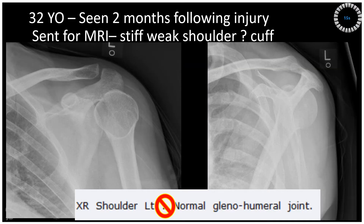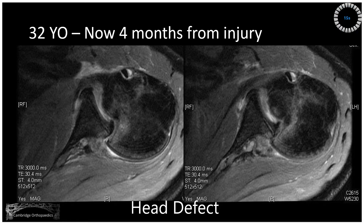This is a 32-year-old who presents two months following their injury. They present with stiffness and weakness in the shoulder and are sent for an MRI. These were the initial radiographs. Now four months from injury, the patient returns with the MRI showing this abnormality.